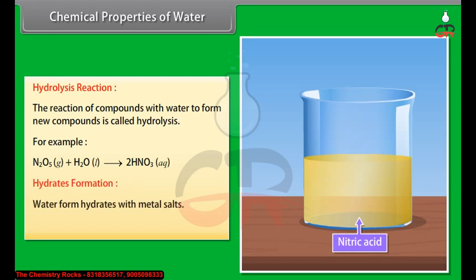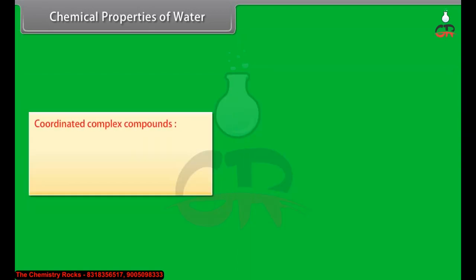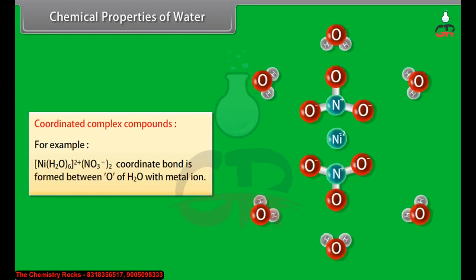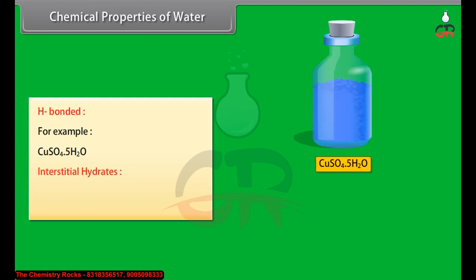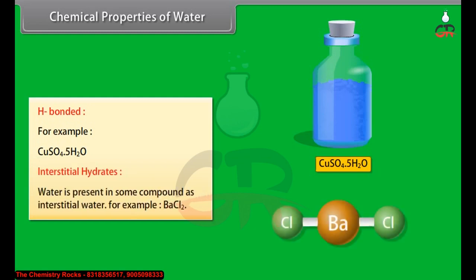Hydrates formation: water forms hydrates with metal salts. There are three main types - coordinated complex compounds, for example nickel(II) nitrate hexahydrate where a coordinate bond is formed between oxygen of H2O with metal iron; H-bonded, for example copper sulfate pentahydrate; and interstitial hydrates where water is present in some compounds as interstitial water, for example BaCl2.